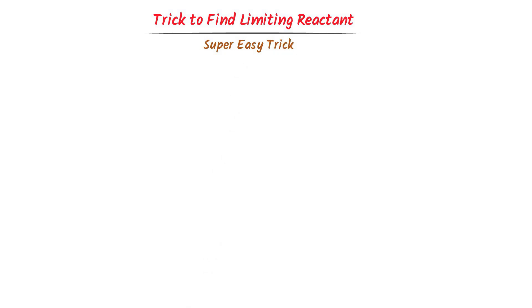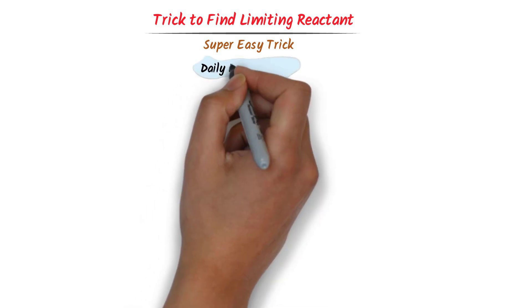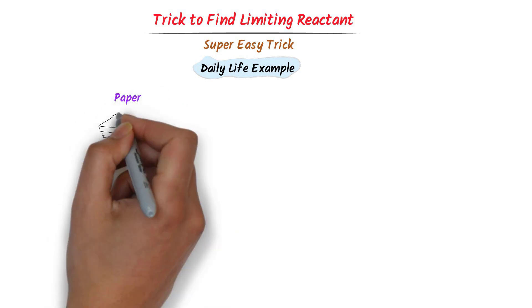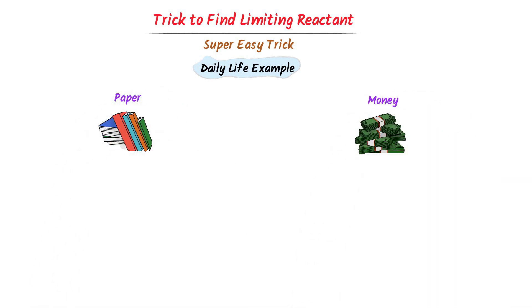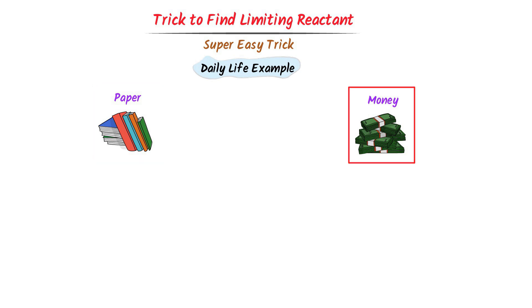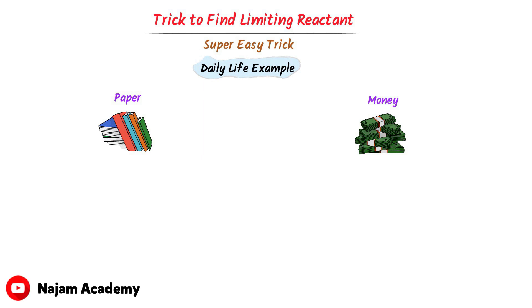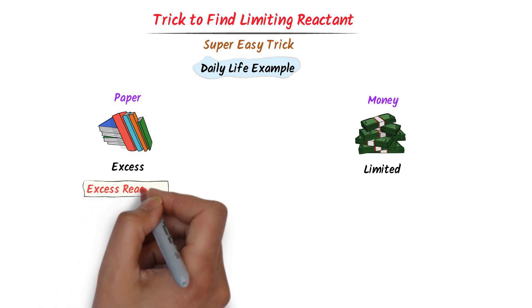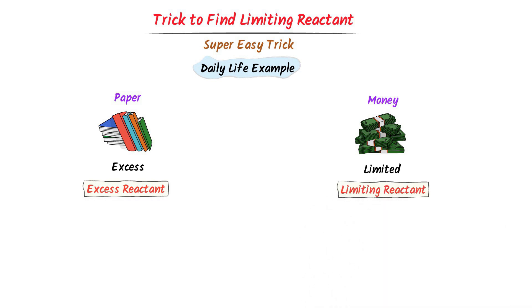Trick to Find Limiting Reactant and Excess Reactant. I will teach you a super easy trick to find limiting reactant and excess reactant in less than a minute. First of all, let me teach you a daily life example. Let's consider paper and money. We know that paper is everywhere but money is not — paper is found in excess but money is limited. So, paper is the excess reactant and money is the limiting reactant.